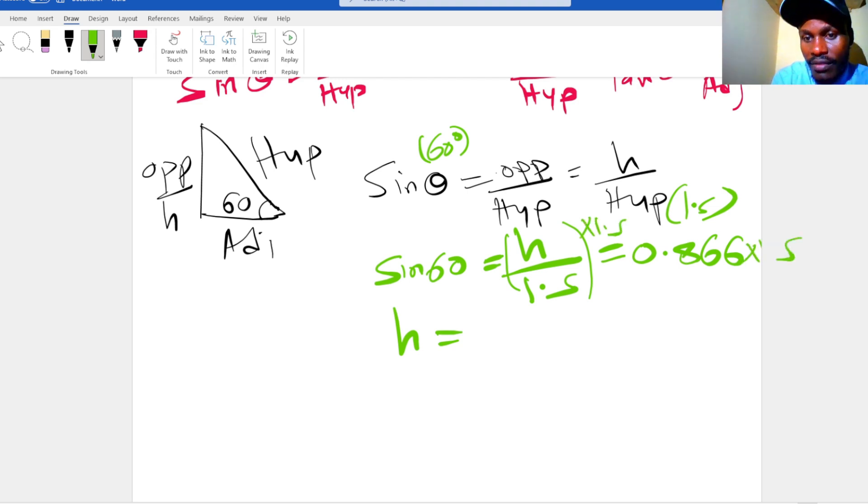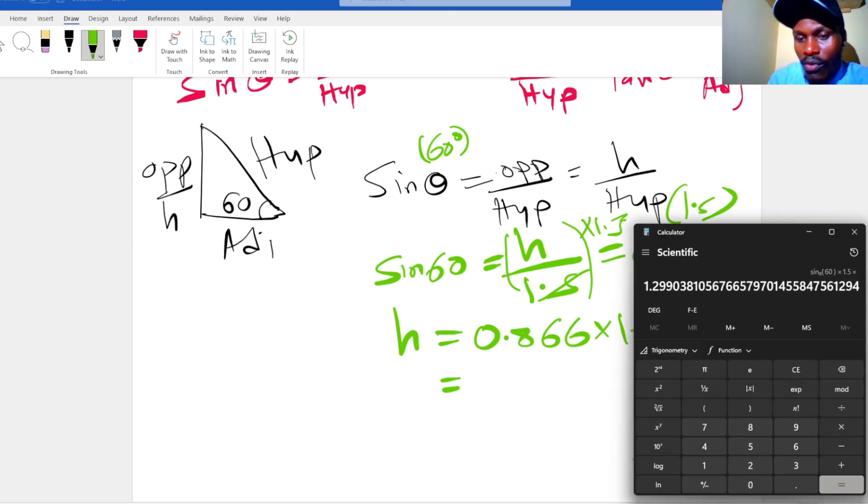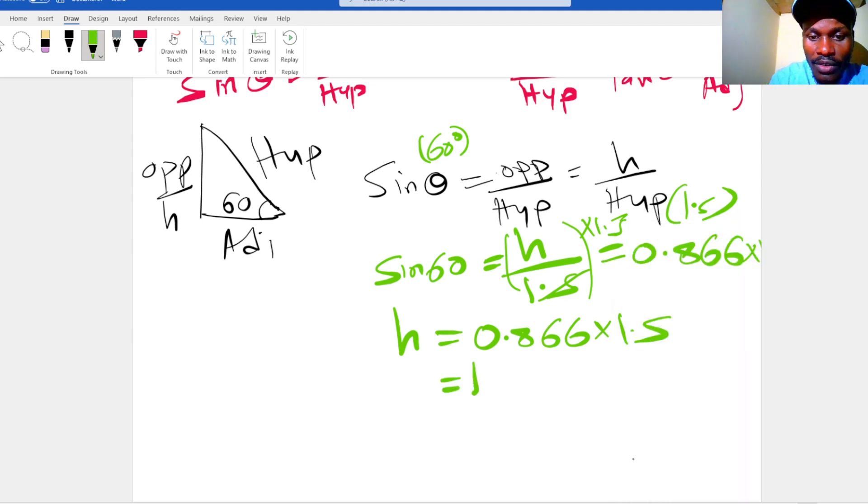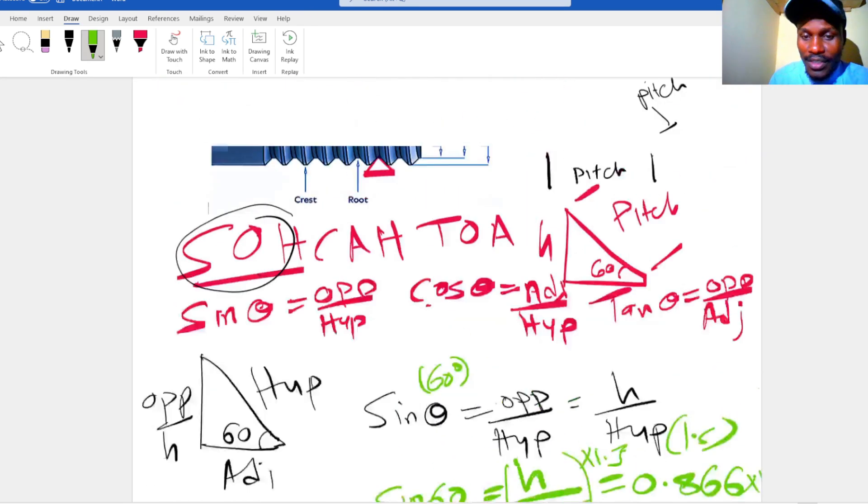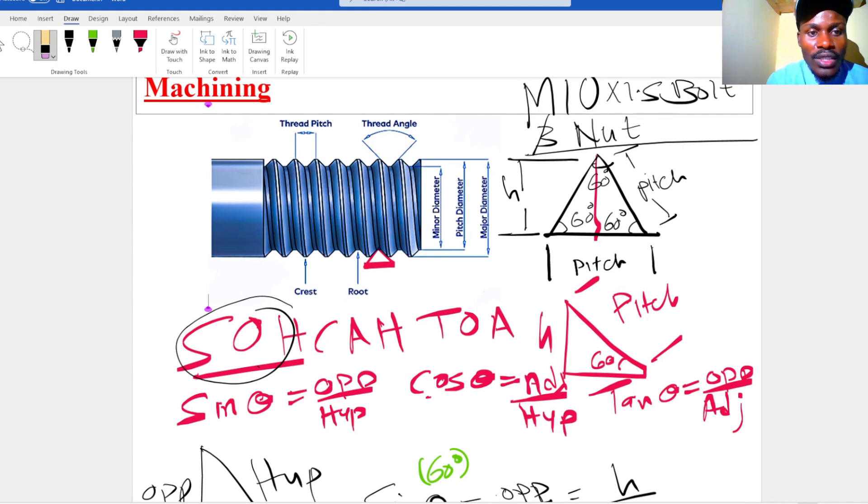So h is the same as 0.866 by 1.5, and we will get 1.299 millimeters. And that's our thread depth. Now, how do we know the major diameter of our shaft before machining?